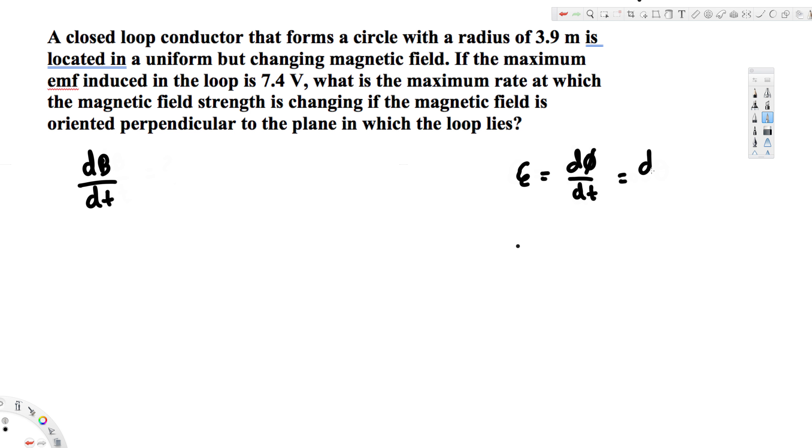Since we have the EMF, we can directly equate this because our main purpose is to find dB/dt. We can rearrange this. We know that the EMF provided is 7.4 volts, which equals dB/dt times A times cos theta.